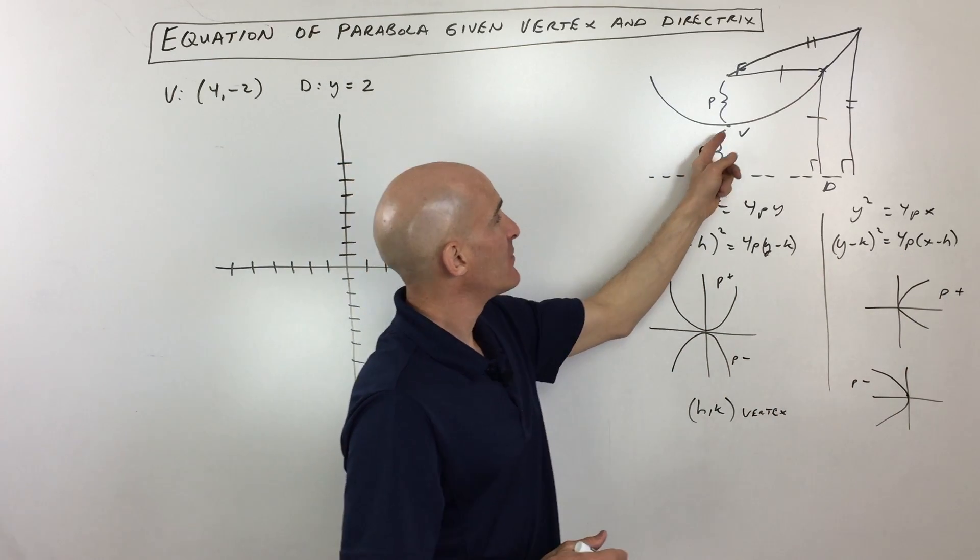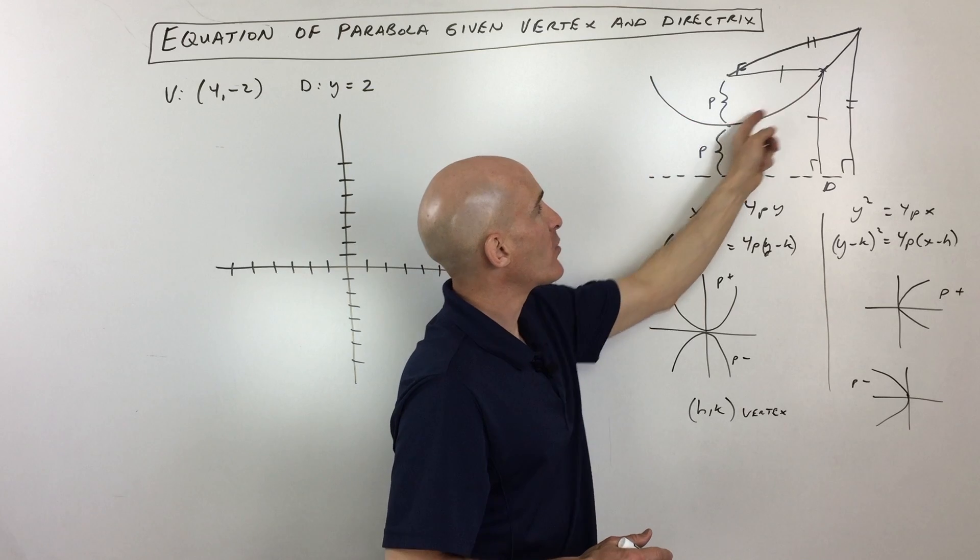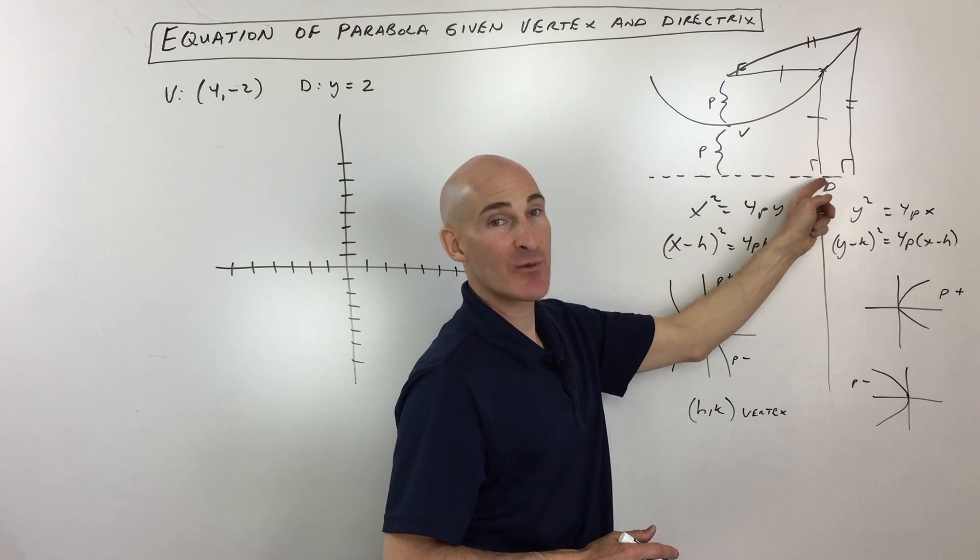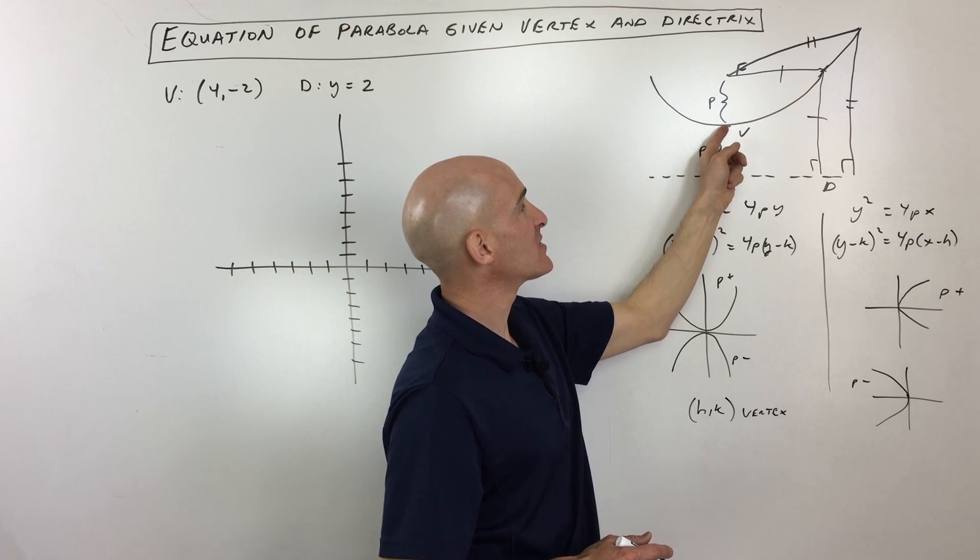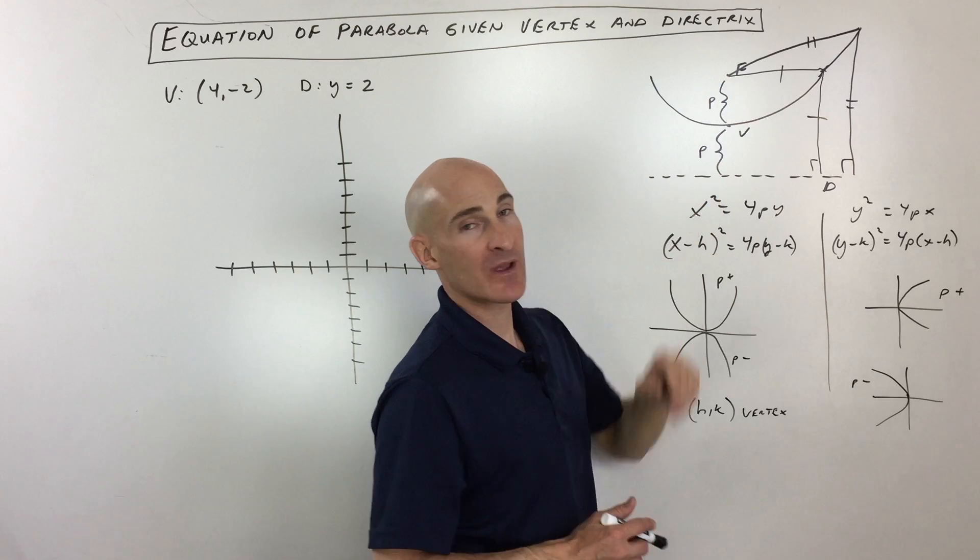The distance from the vertex, which is the point where the parabola bends, and this imaginary line we call the directrix, that distance we call p. And p is also the distance from the vertex to the focus, and that's the point right there.